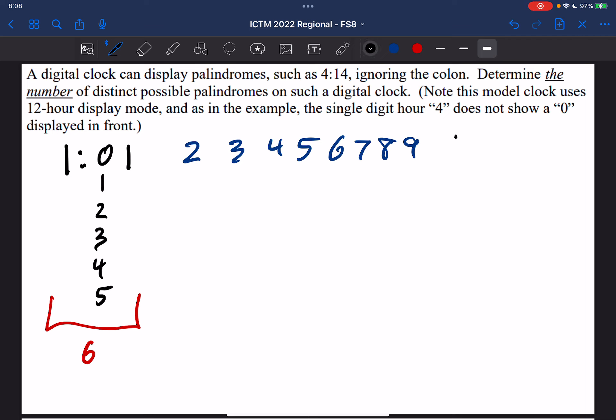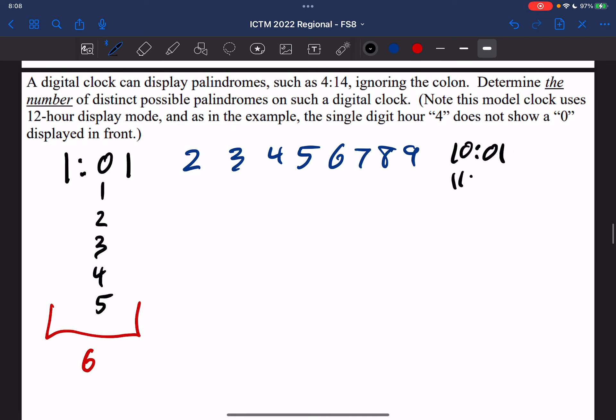But it's going to be different when we hit 10. Because once we hit 10, then there's only one possibility. Because it has to be symmetrical. Same thing with 11 and 12. So that means we just have 3.